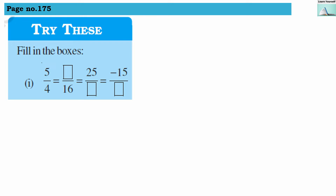Try these sums from page number 175. The first numerical is 5 divided by 4, and we have to write a number with 16 in its denominator. Let us check the link between these two numbers — when we multiply 4 by 4 we get 16, so above and below we multiply by 4. We multiply 5 by 4 and get 20.